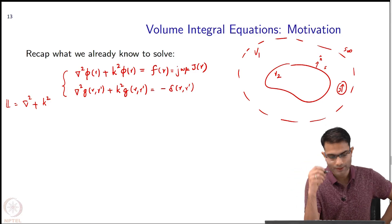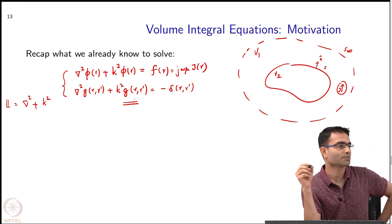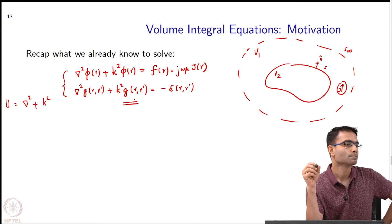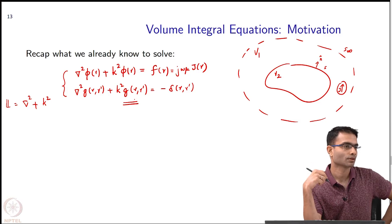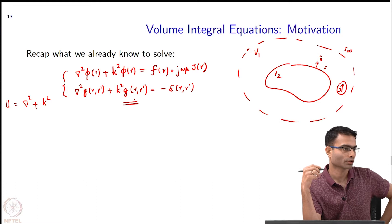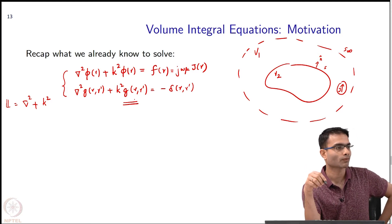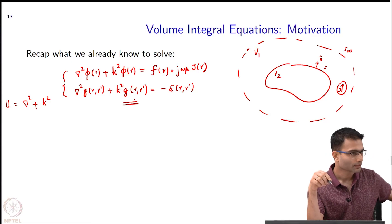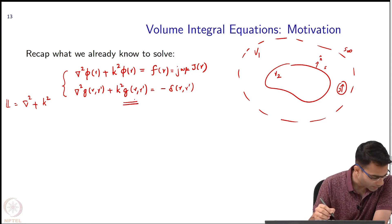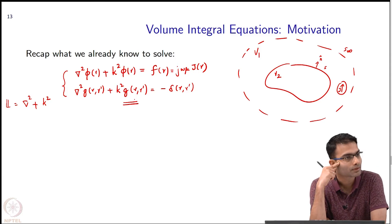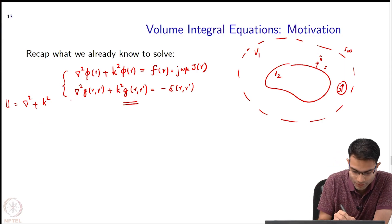Now when we went to actually solve for this Green's function what did we do? The steps briefly: we converted it first to 2D polar coordinates, I wrote down the Laplacian in the polar coordinates and after some amount of algebraic manipulation what did I end up with? I ended up with a differential equation.